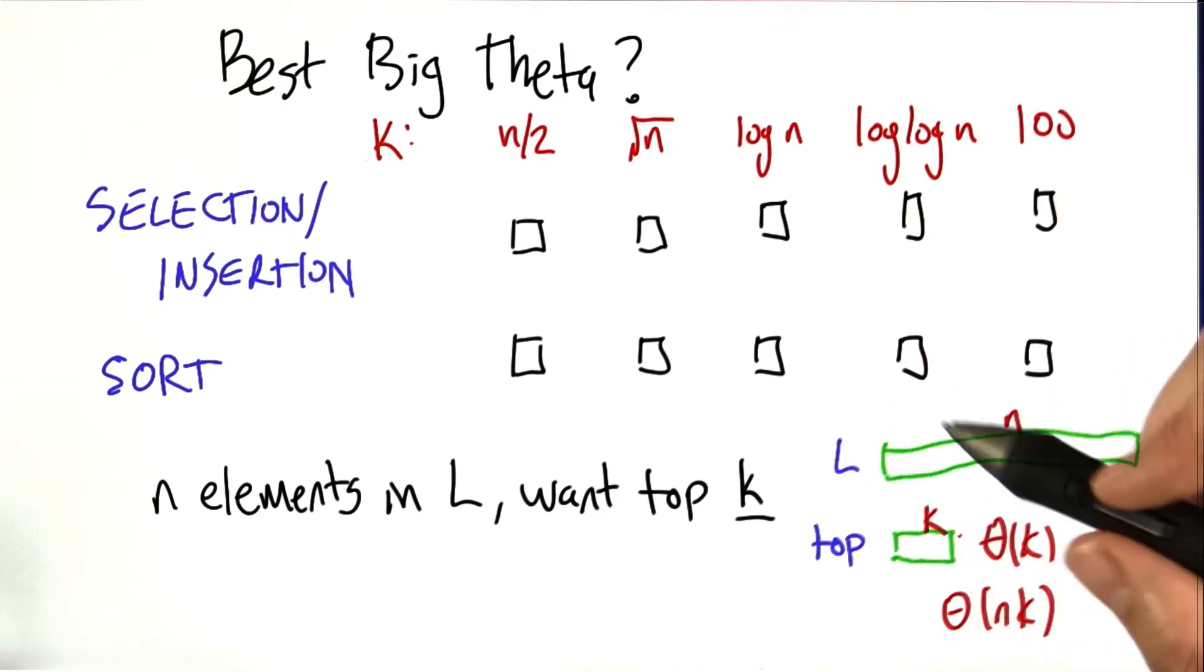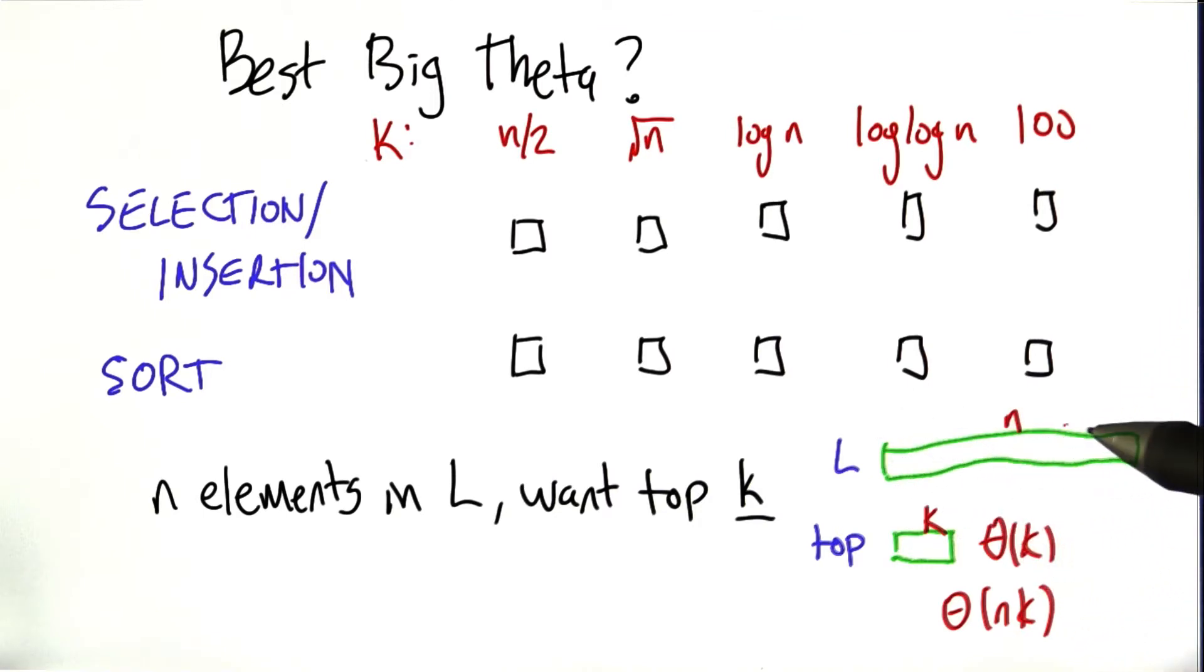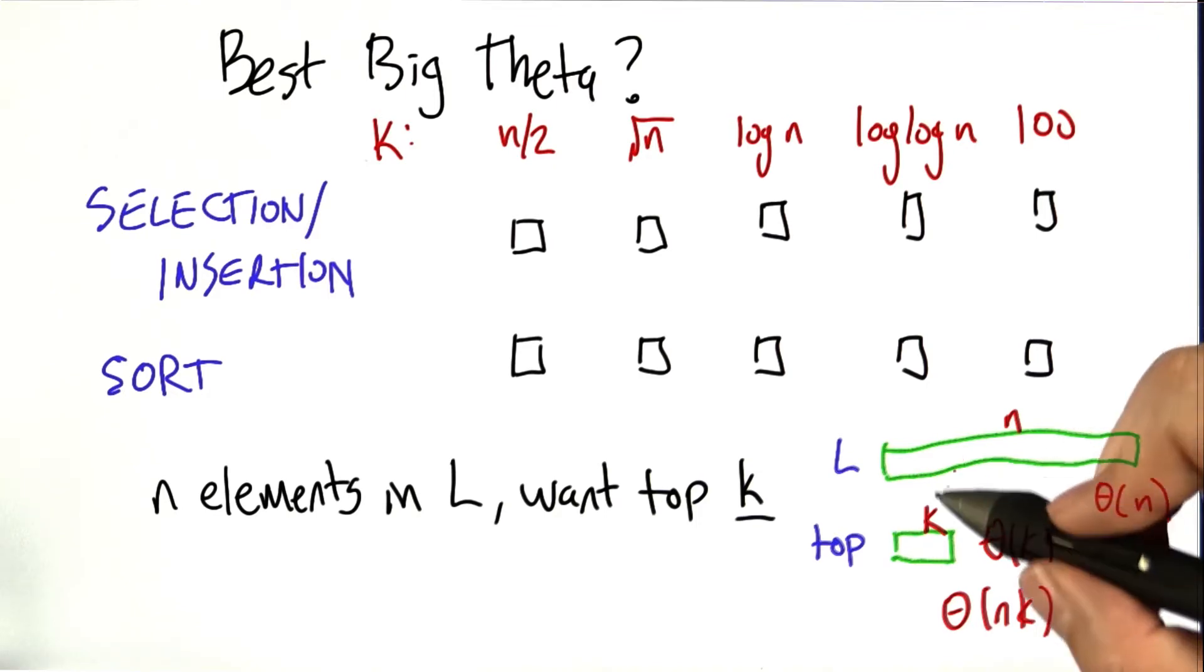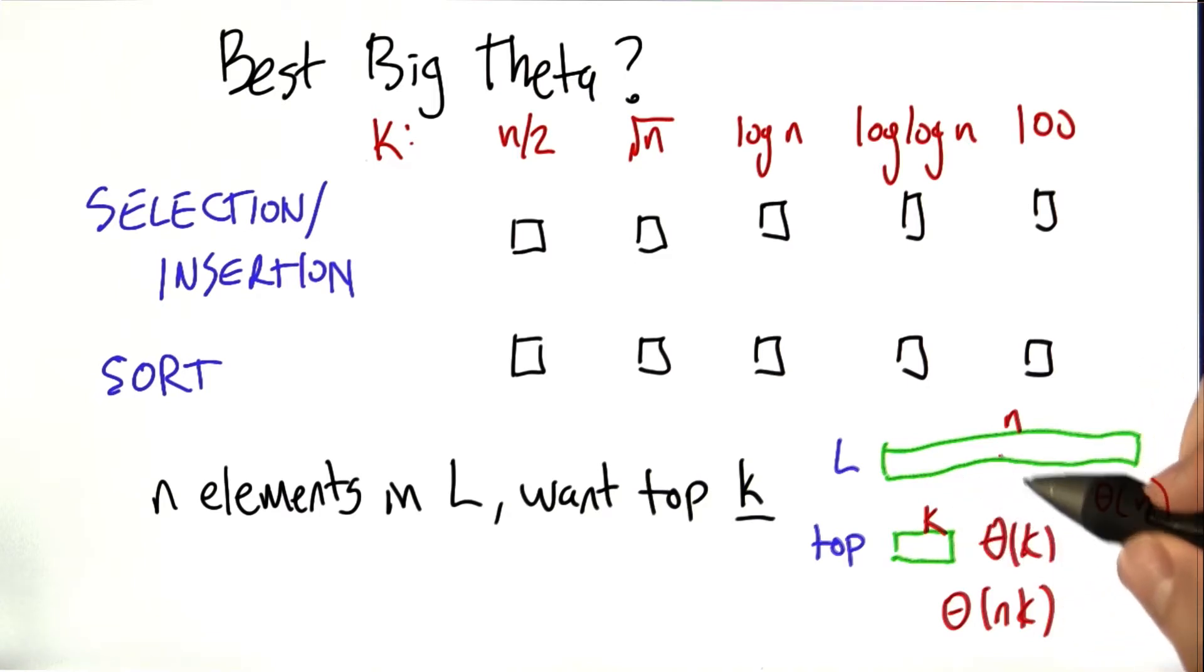Selection is the same. What happens in selection is you run through this list of n and you pull out the maximum and delete. So that takes big theta of n time, and you repeat that once for each of the elements you want to pull out. So it becomes also big theta of n times k.